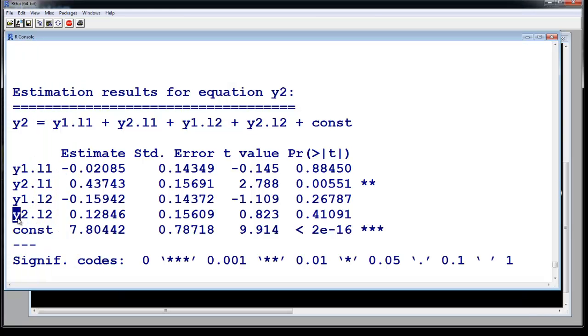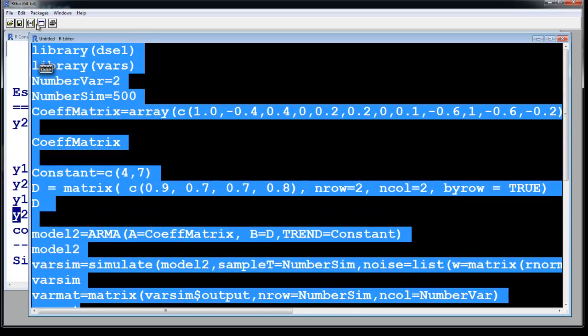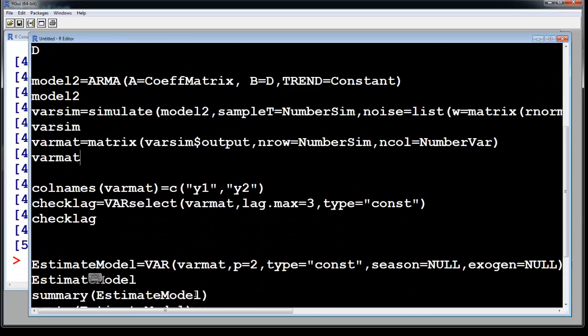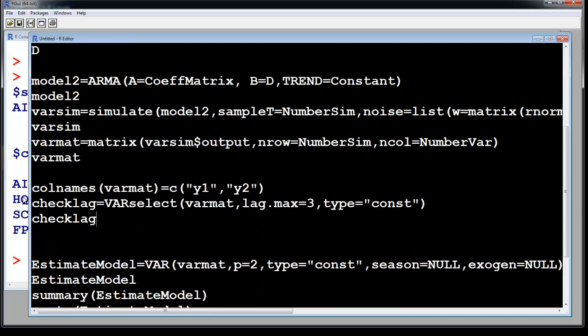Let us run this again. So first we have this variance matrix, we run again this entire thing. You have a different variance matrix now because you're simulated every time. Then you can again do check lag. The beauty of the check lag always comes out to be correct, 2.